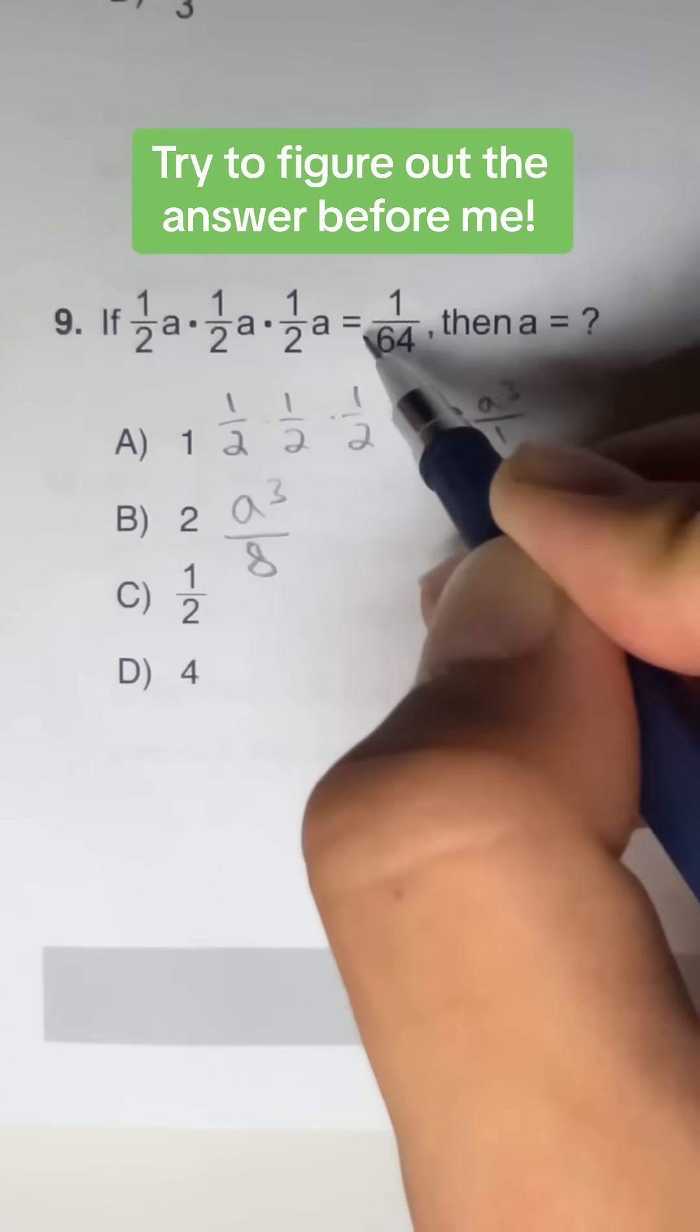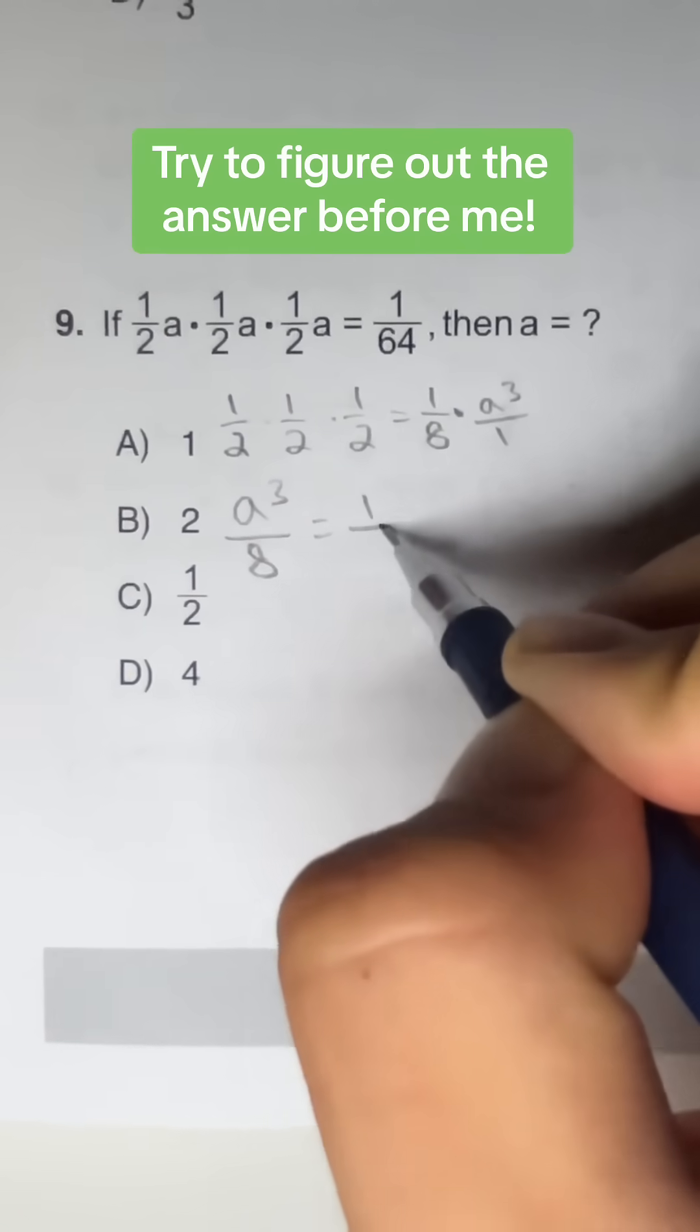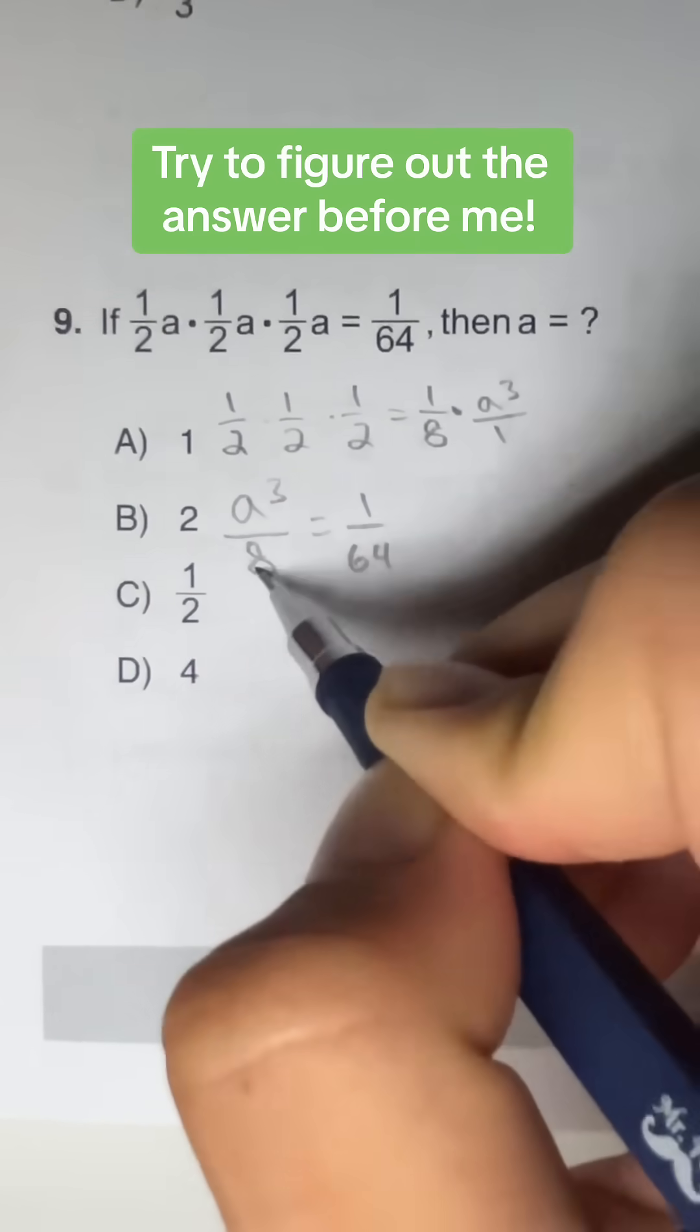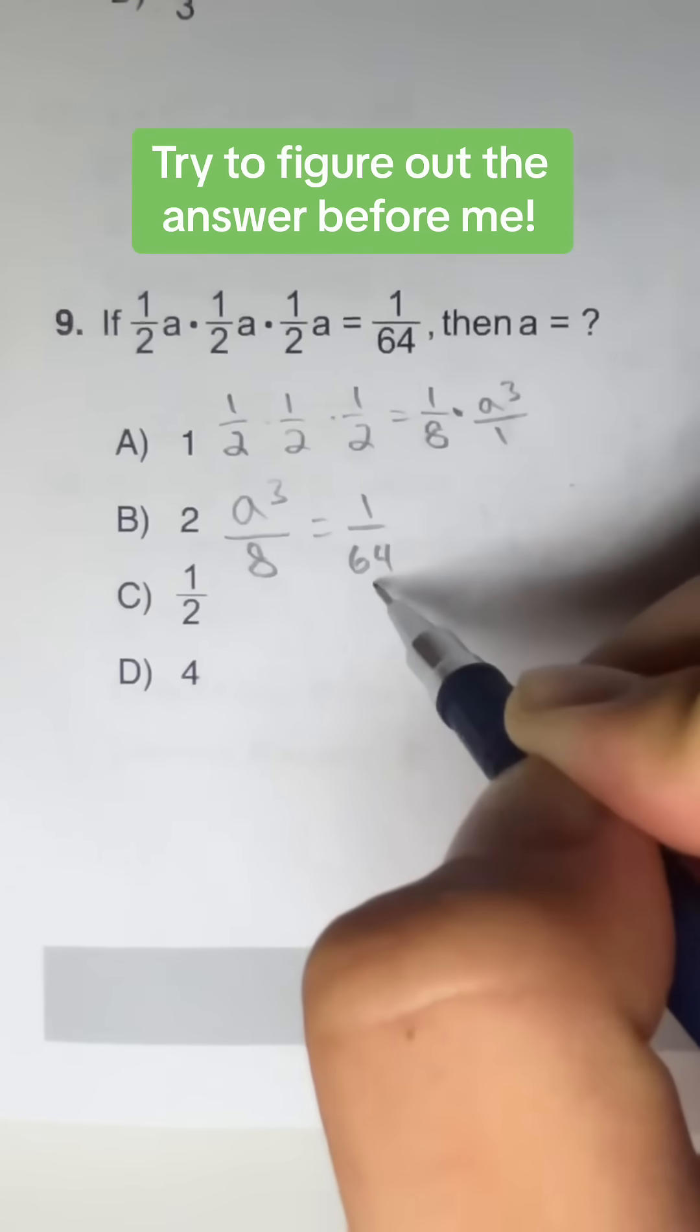After that, we're going to equate this to 1 over 64. And now the denominators are not the same. So our goal is to get them to the same so we can compare them.